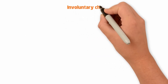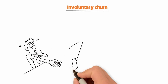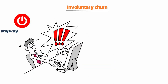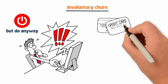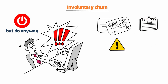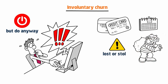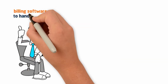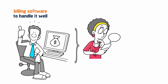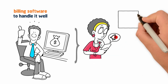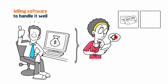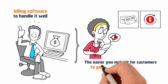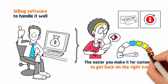Involuntary churn, on the other hand, happens when customers don't intend to stop using your service, but do anyway — because their card information is out of date, or their card hard declines because it's been lost or stolen, or soft declines when it hits its limit. To reduce involuntary churn, you need your billing software to handle it well, sending reminders to customers, encouraging them to provide a new card, and automating re-attempts of payments. The easier you make it for your customers to get back on the right track, the lower your churn will be.